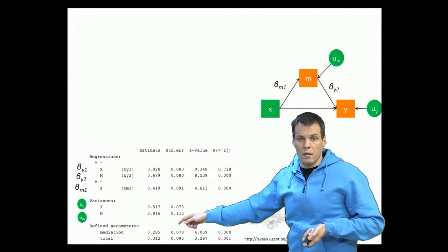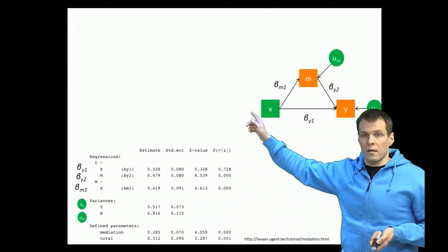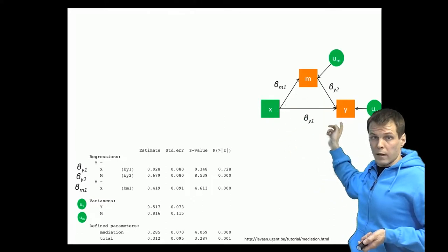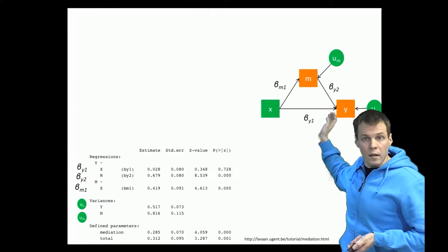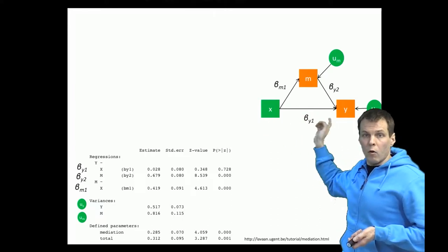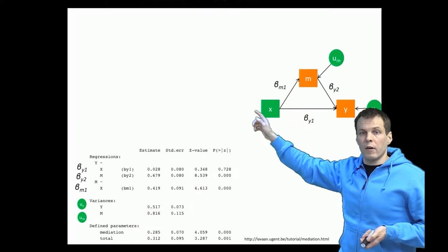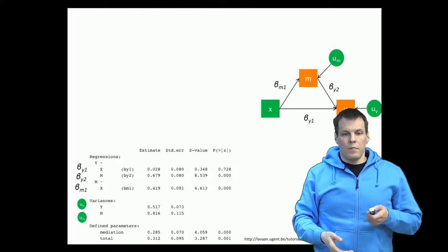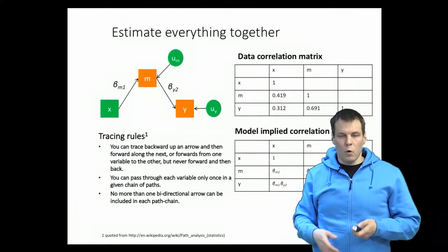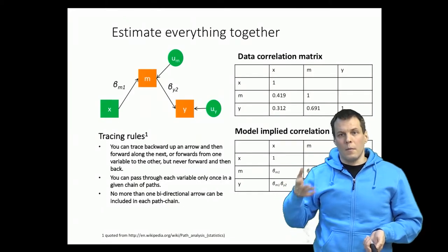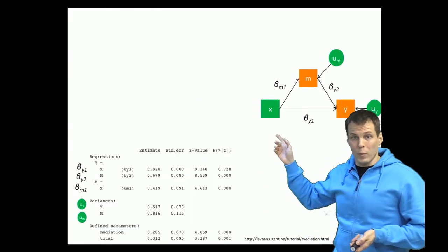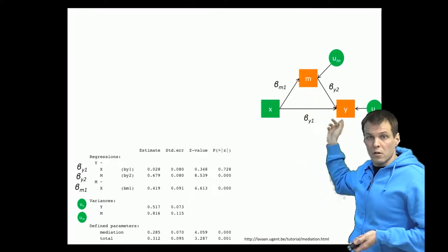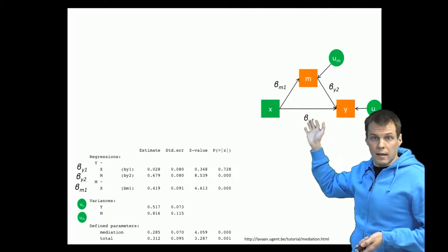We also have the total effect, which is the effect of x on y that goes directly and through m — that is, the influence of x on y regardless of whether it goes directly or through m. The direct effect is just beta_y1. Importantly, these estimates will be exactly the same as those you get from regression analysis if you estimate this model separately using regressions.